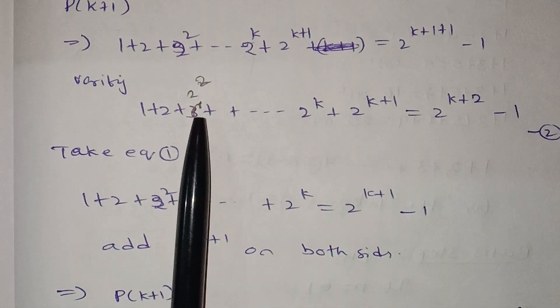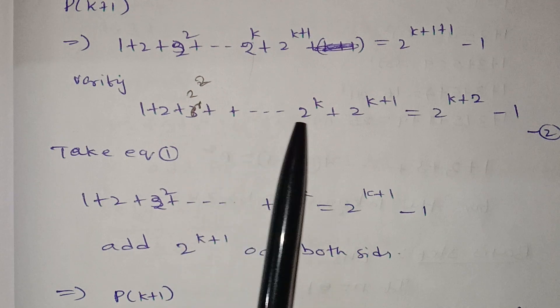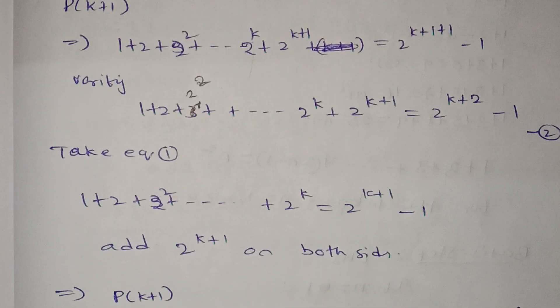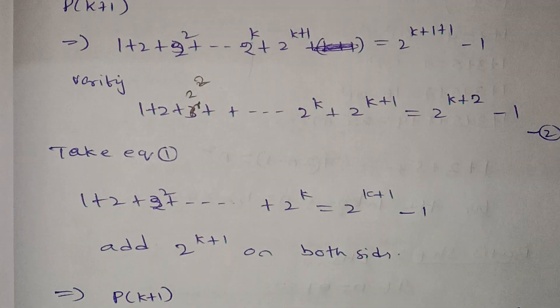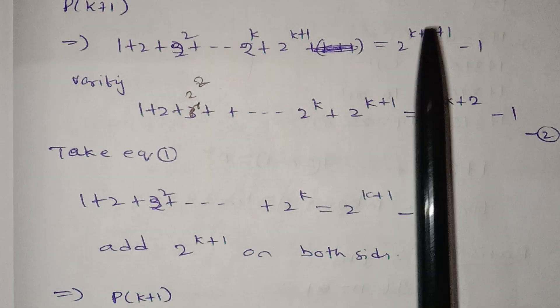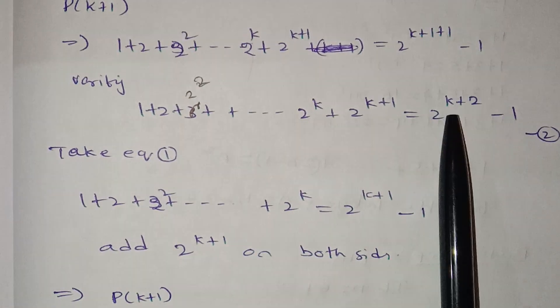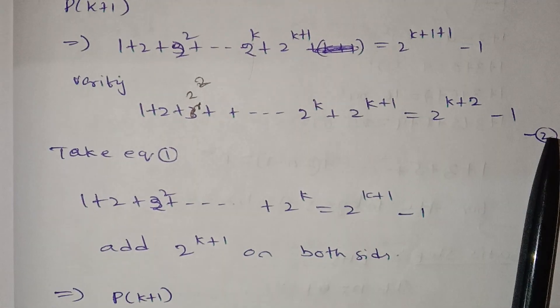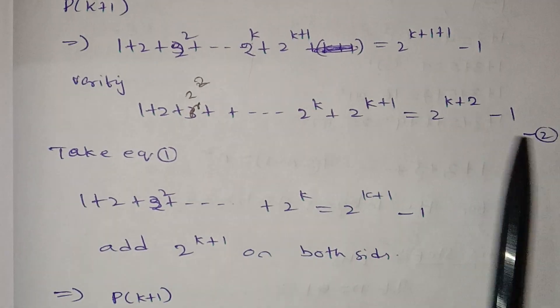Verifying: 1 + 2 + 2² + ... + 2^k, add 2^(k+1). So we get 2^(k+1) + 2^(k+1) − 1, which equals 2^(k+2) − 1. This is equation 2.